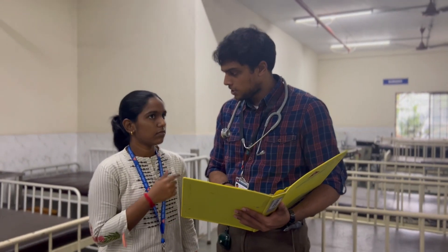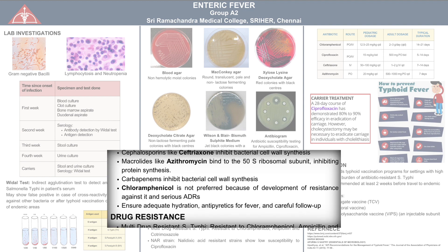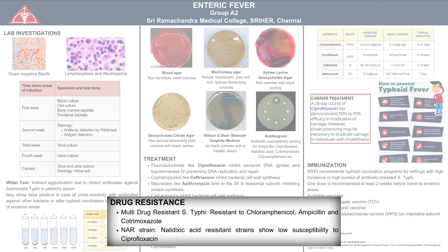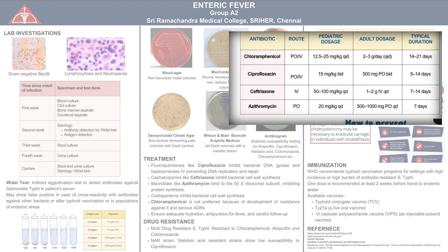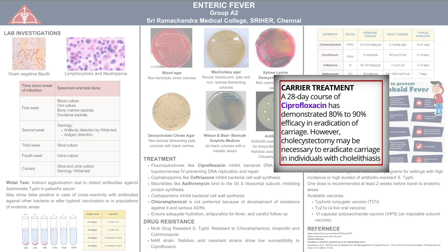The pharmacotherapy of enteric fever includes fluoroquinolones like ciprofloxacin, which inhibit bacterial DNA gyrase and topoisomerase, preventing DNA replication and repair. Cephalosporins like ceftriaxone inhibit bacterial cell wall synthesis. Macrolides like azithromycin bind to the 50S ribosomal subunit and inhibit protein synthesis. Carbapenems also inhibit bacterial cell wall synthesis. Chloramphenicol is no longer a preferred drug due to the development of resistance and serious adverse drug reactions like grey baby syndrome. Drug-resistant strains include multi-drug-resistant Salmonella typhi, resistant to chloramphenicol, ampicillin and co-trimoxazole, and nalidixic acid-resistant strains with low susceptibility to ciprofloxacin. The drug of choice in fluoroquinolone resistance is azithromycin and ceftriaxone. The recommended treatment for carriers includes a 28-day course of ciprofloxacin.